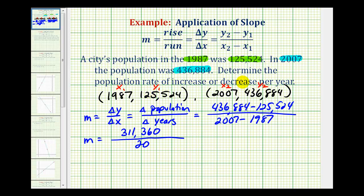But we want this rate to be per year, which means we want the denominator to be equal to 1. So we'll have to divide both the numerator and denominator by 20. 20 divided by 20 is equal to 1, and 311,360 divided by 20 is equal to 15,568.